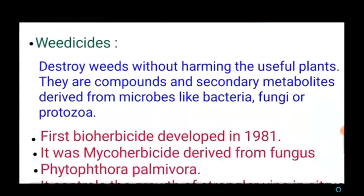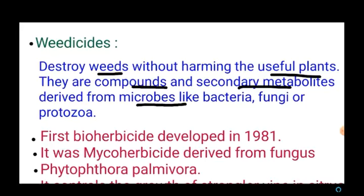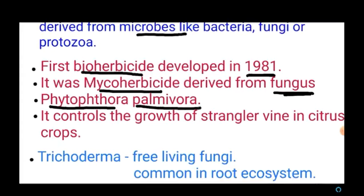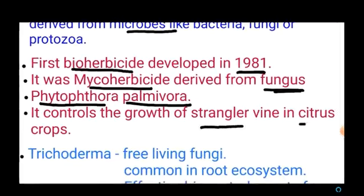Next are bioherbicides. These are substances that destroy weeds without harming useful plants. They are compounds and secondary metabolites derived from microbes like bacteria, fungi, and protozoa. The first bioherbicide was developed in 1981 and is called a mycoherbicide — derived from the fungus Phytophthora palmivora. It controls the growth of strangler vine in citrus crops.